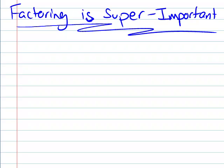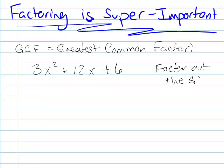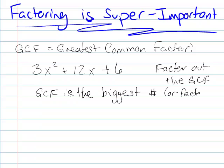So let's work a couple of problems. We looked at finding the GCF, the greatest common factor for various terms. So what we did, for example, if we had 3x squared plus 12x plus 6, and we want to factor out the GCF. Remember the GCF is the biggest number or factor that divides into all the terms evenly.